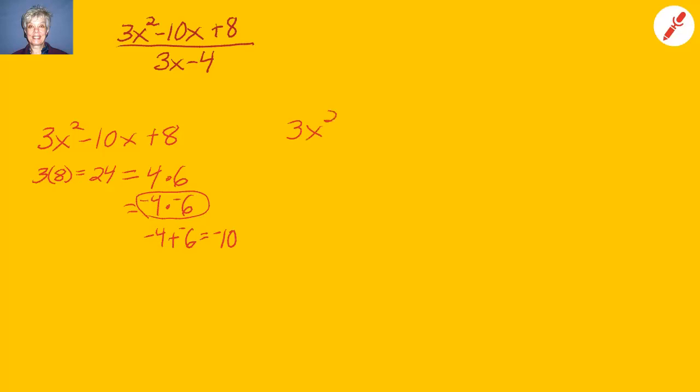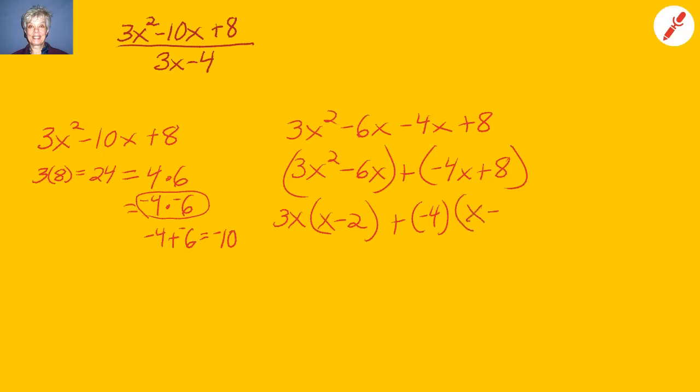3x squared minus 6x minus 4x plus 8. We'll factor into 3x times x minus 2 plus negative 4. Remember that when the leading term of a polynomial is negative and you're factoring out a GCF, it always has to be a negative GCF. So our factorization is going to be x minus 2 times 3x minus 4.